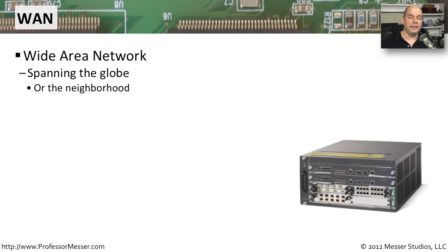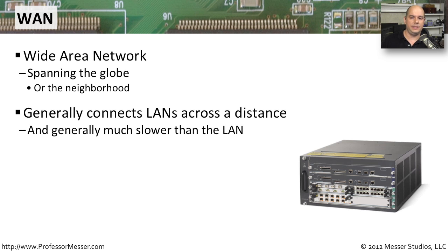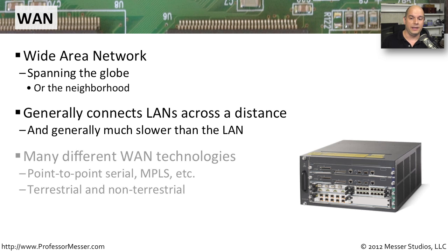A WAN is a wide area network. It is a network that extends across a large area — this might go to the other side of the world, or it might go down the street, but it's something that's not connecting to you locally. You generally have to connect across a long distance, and your speeds are not going to be as good as if you are directly connected over a LAN type of connectivity.